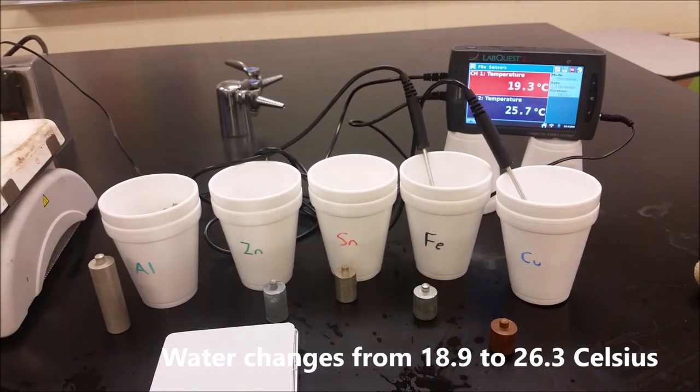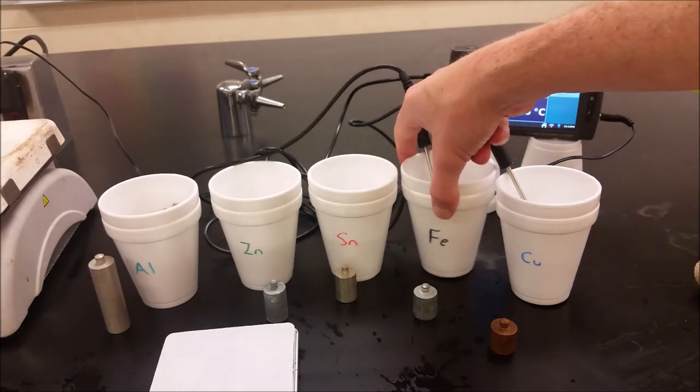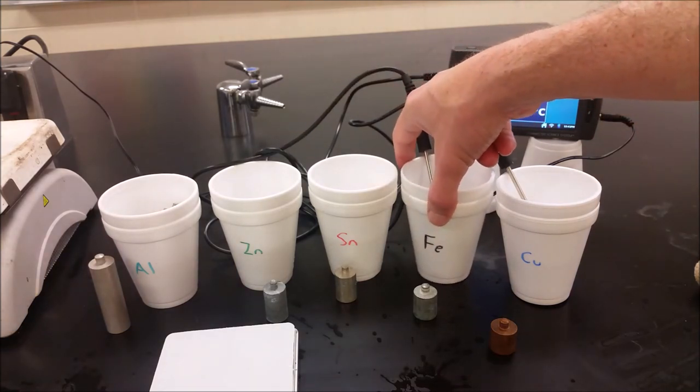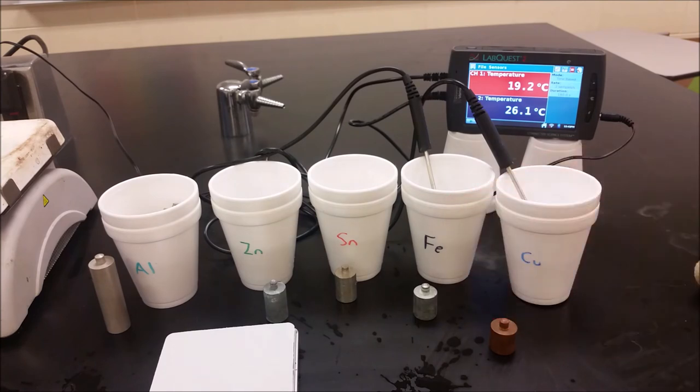So again, we're seeing a six degree increase for the water, six, seven, seven degree increase for the water. But we're seeing a very, very large temperature drop for the metal. This metal went from a hundred degrees down to 26.2. And so it's a drop of 73 degrees and then some. All right, one last one here. We're going to go ahead with our copper. So the one that's not gray or silver colored.